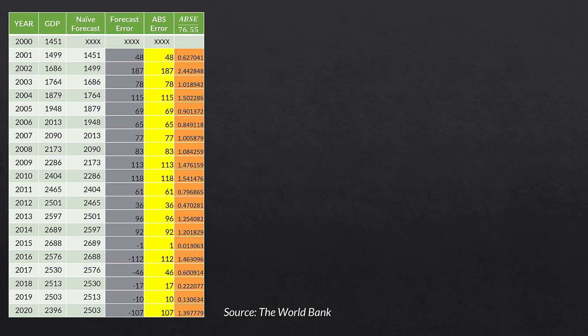When we do that basic math we have a table that shows the year, the GDP number, naive forecast value, forecast error, and the absolute error in the yellow column. Then we take the absolute error and divide it by the MAE of the naive forecast method, which is $76.55. In the case of 2001, we take 48 divided by 76.55. For 2002, we take 187 divided by 76.55. For 2003, 78 divided by 76.55, and so on.